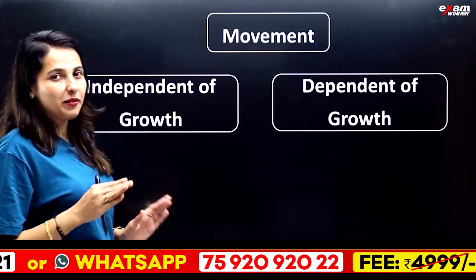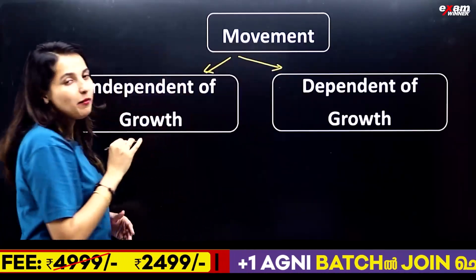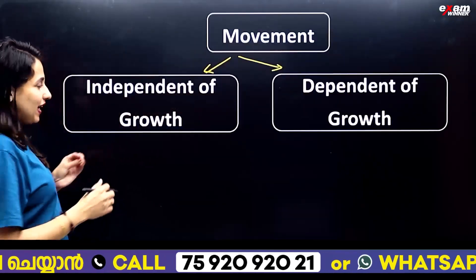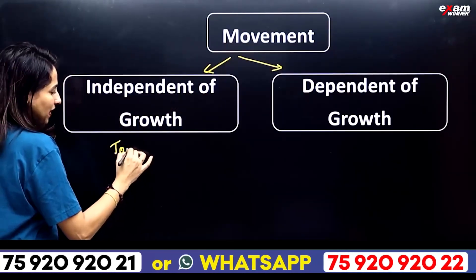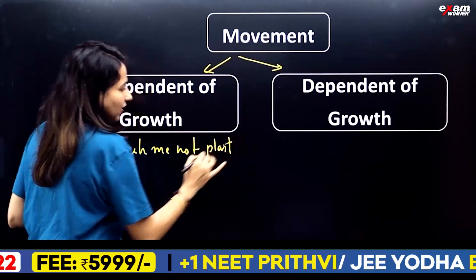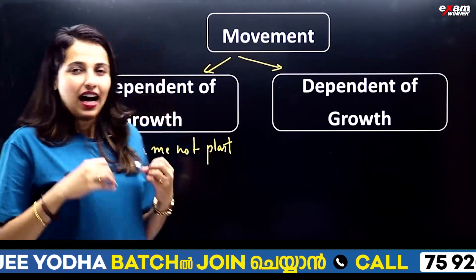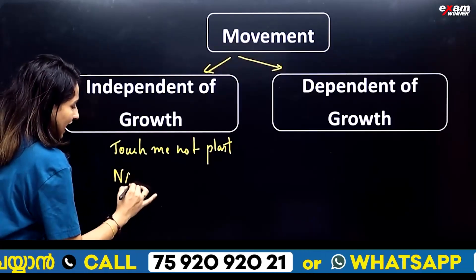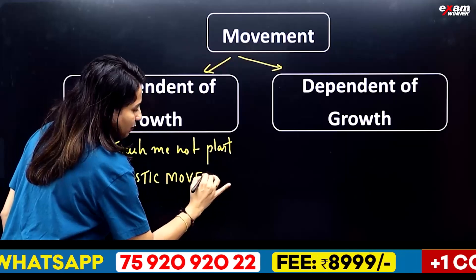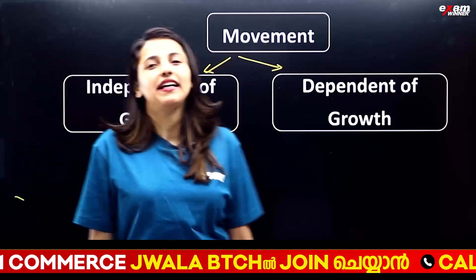We divide movement in plants into two types. One is a growth independent movement, one is a growth dependent movement. The touch me not plant has a growth independent movement. We call it nastic movements.